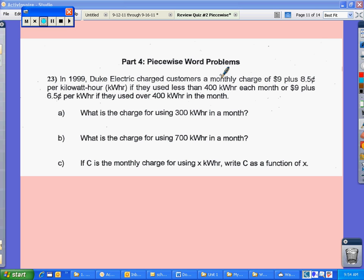In 1999, Duke Electric charged customers a monthly charge of $9 plus 8.5 cents per kilowatt hour if they use less than 400 kilowatt hours each month. Or, $9 plus 6.5 cents per kilowatt hour if they use over 400 in the month.